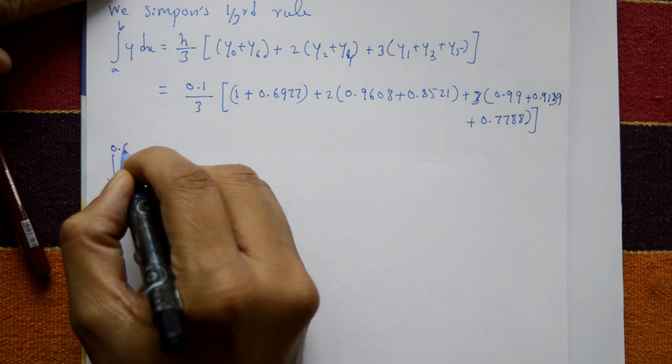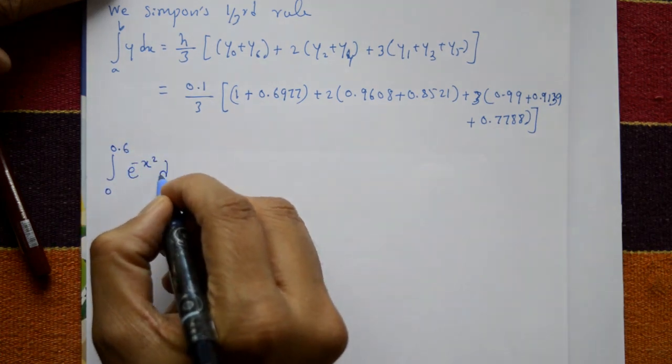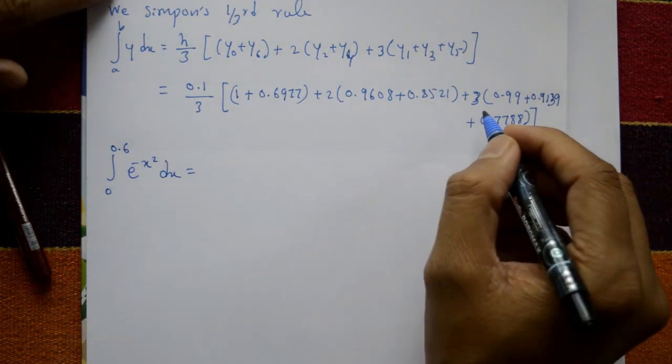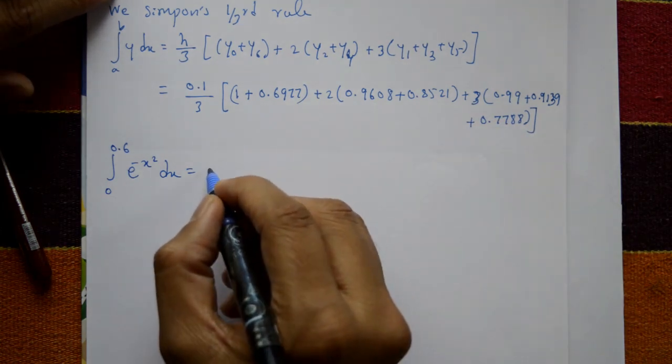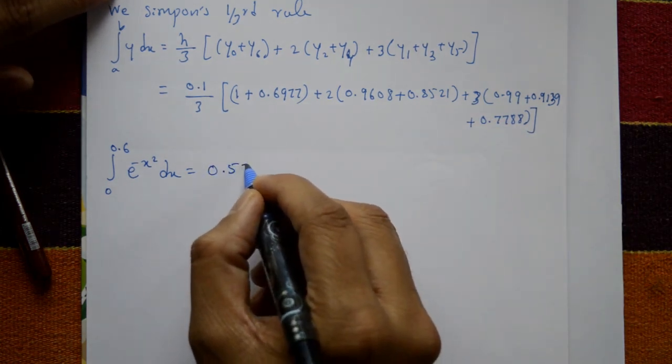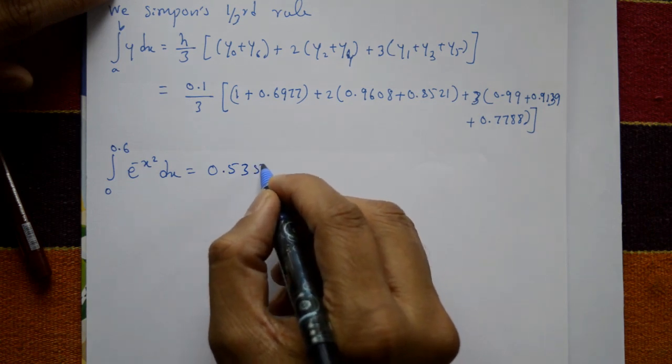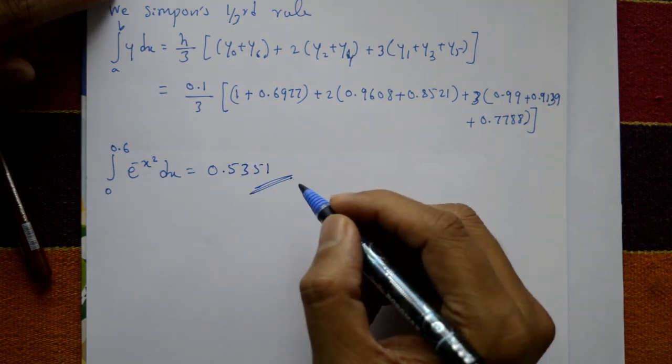Now the integration from 0 to 0.6 of e^(-x²) dx is equal to... simplifying this value gives 0.5304223. This is the required solution.